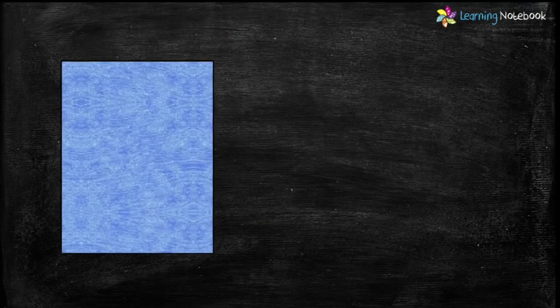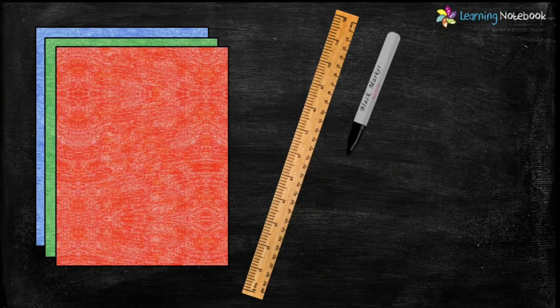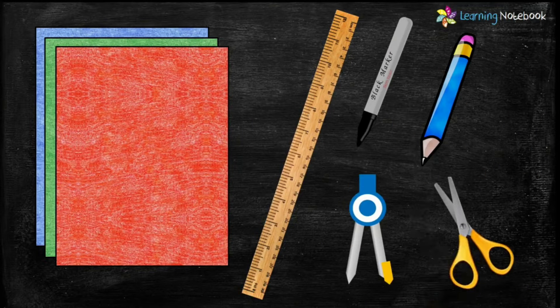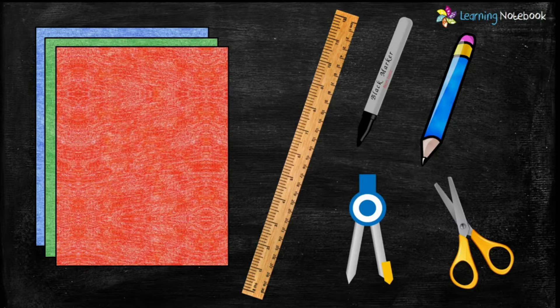For this activity, we need a few A4 colorful sheets, a ruler, a black marker pen, a pencil, a compass, and a pair of scissors.